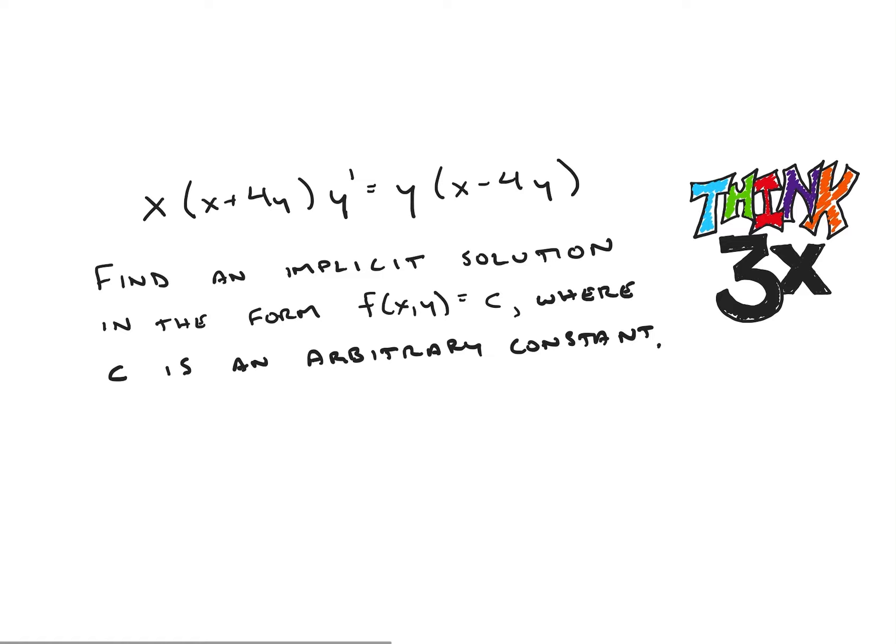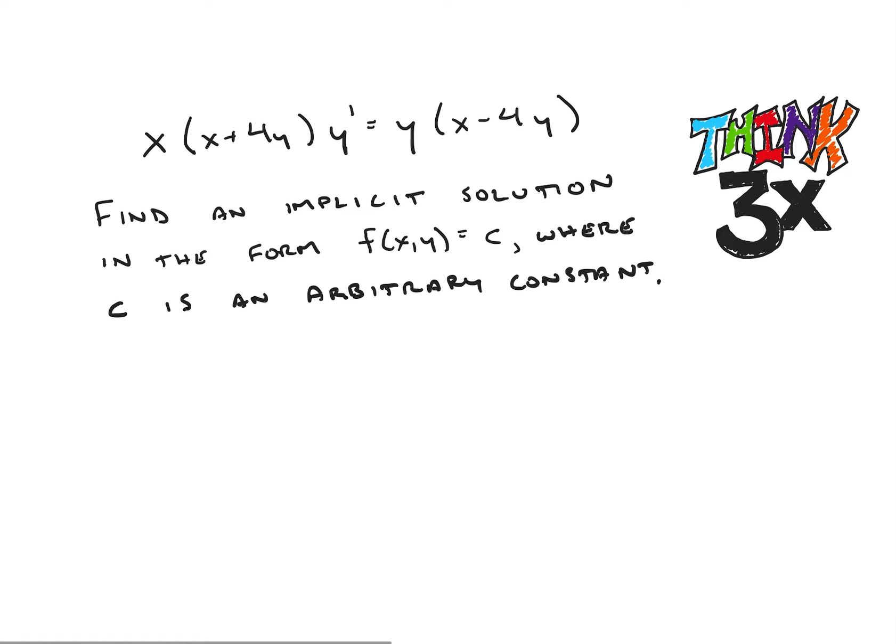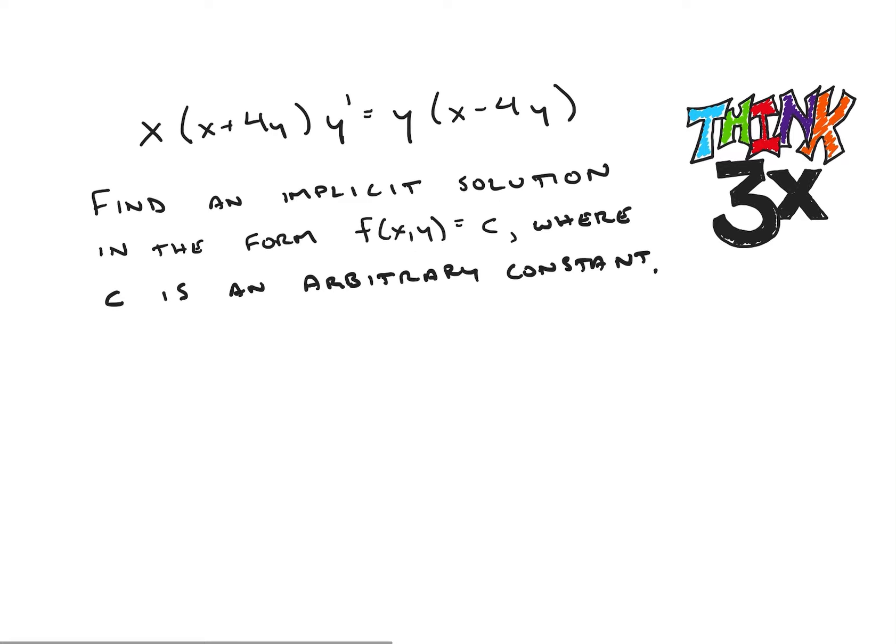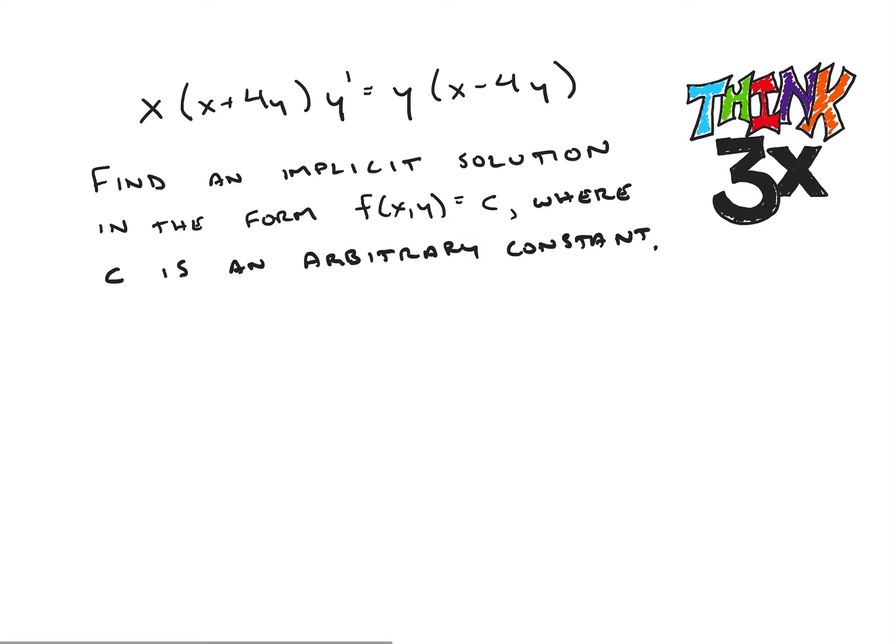Okay, so looking at this, the first thing—well, I'll be honest, I tried a few things that did not work. But what ended up working is, let's start off by getting our derivative on the left and everything else on the right. So let's get y prime on the left, get y over x times x minus 4y over x plus 4y.